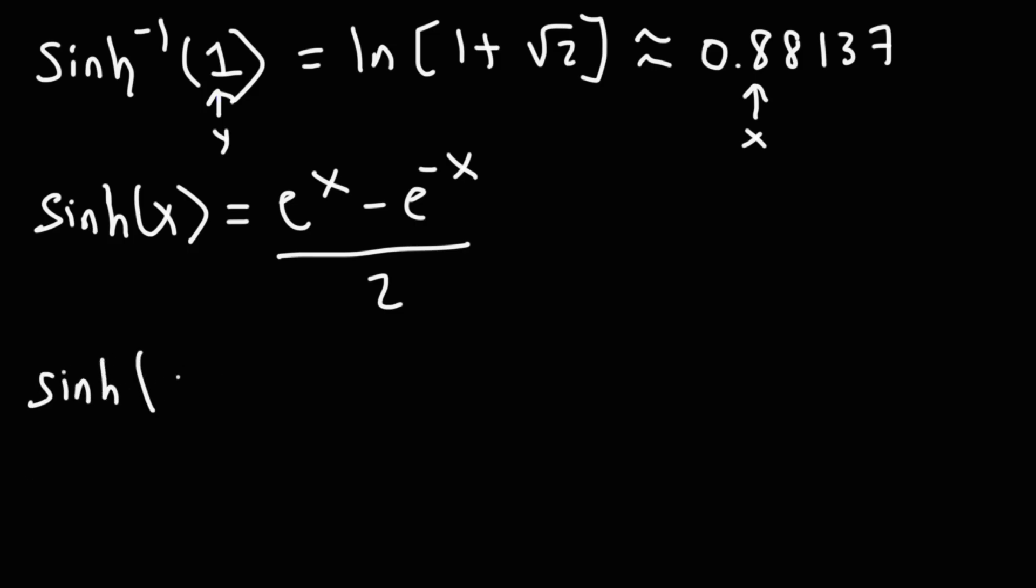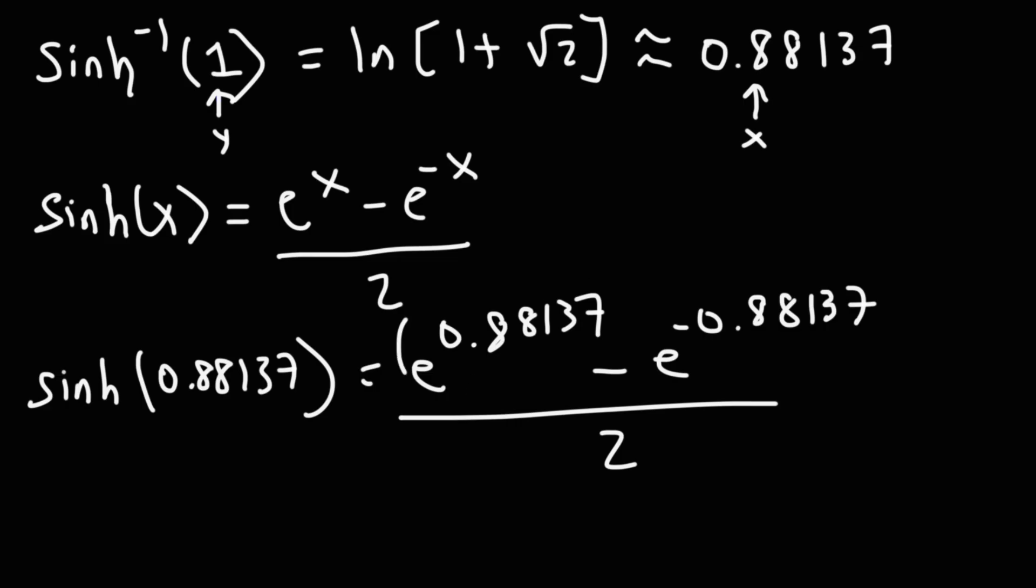So let's go ahead and do that. Let's evaluate this at this point. So this is going to be e raised to the 0.88137 minus e to the negative 0.88137 all divided by 2. Go ahead and plug that in. You may want to put this in parentheses. And don't forget this negative sign right here. I got 0.999995, which is approximately 1. So that's how you know that you have the right answer. You can check it with this formula.